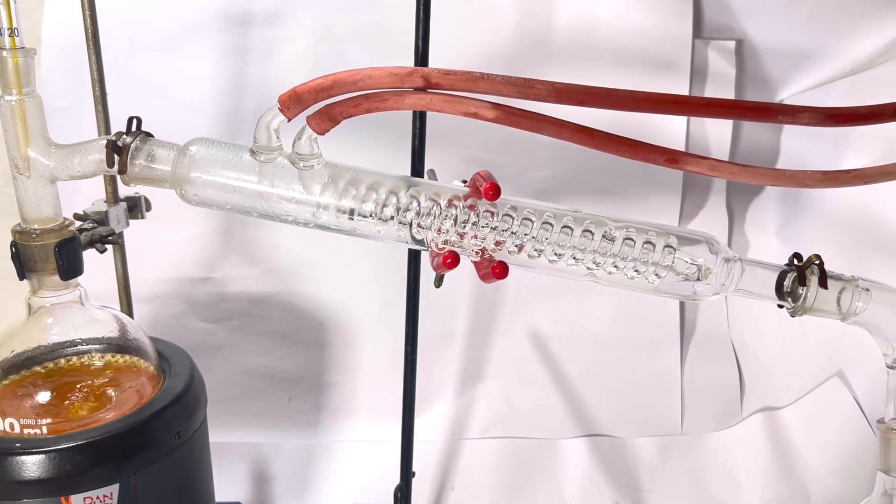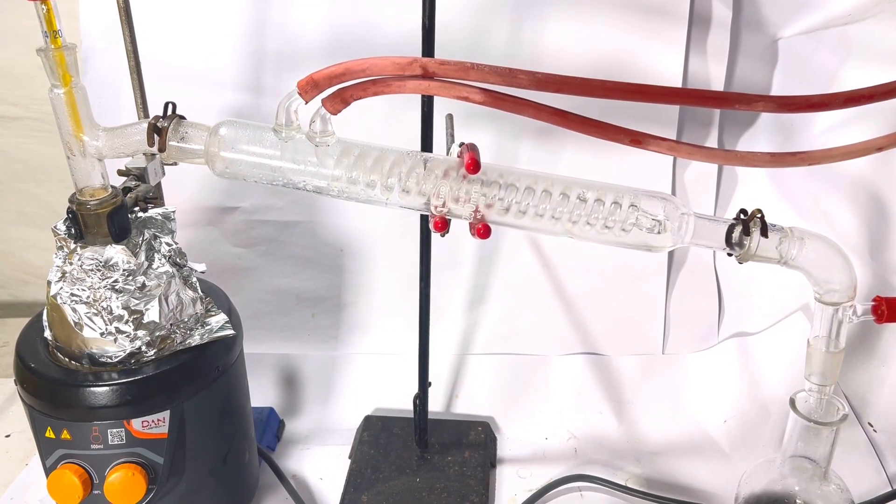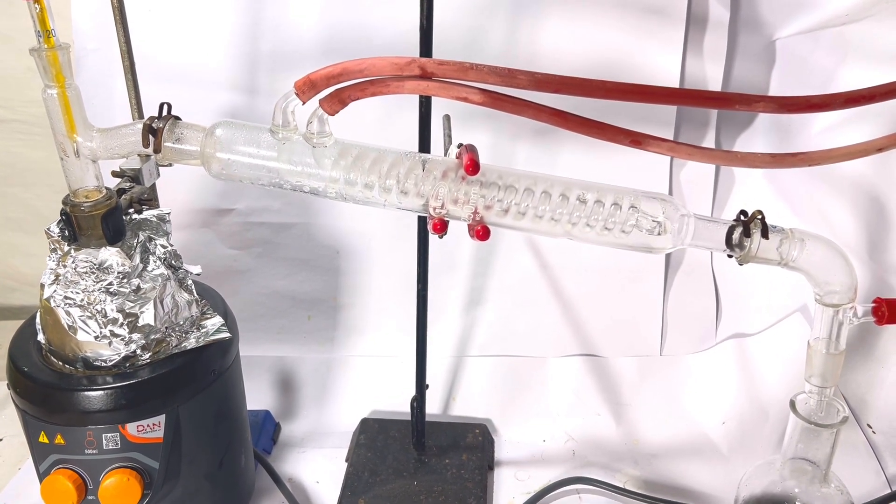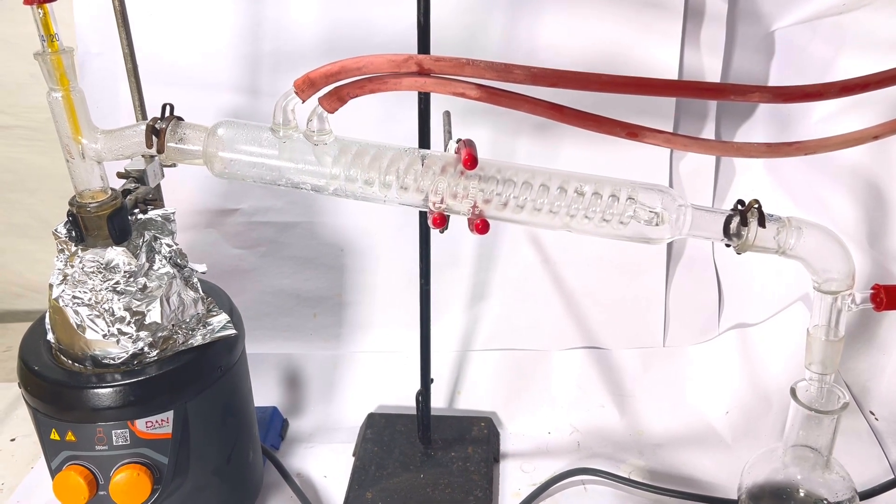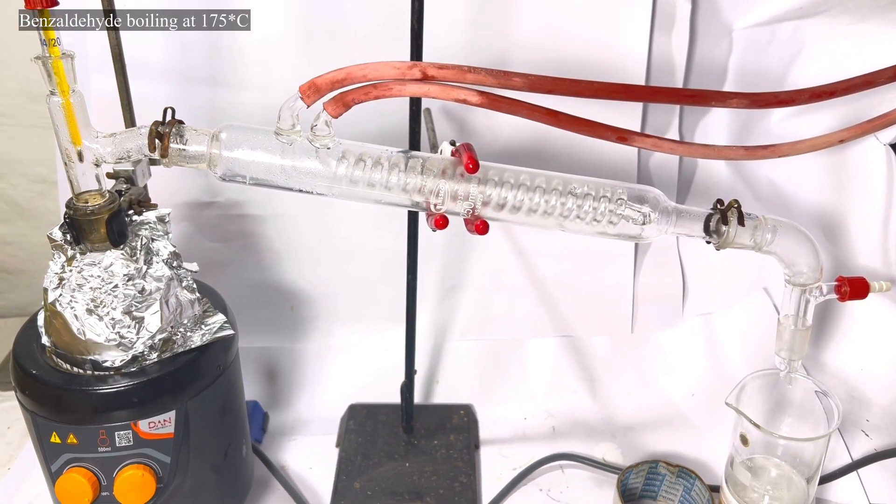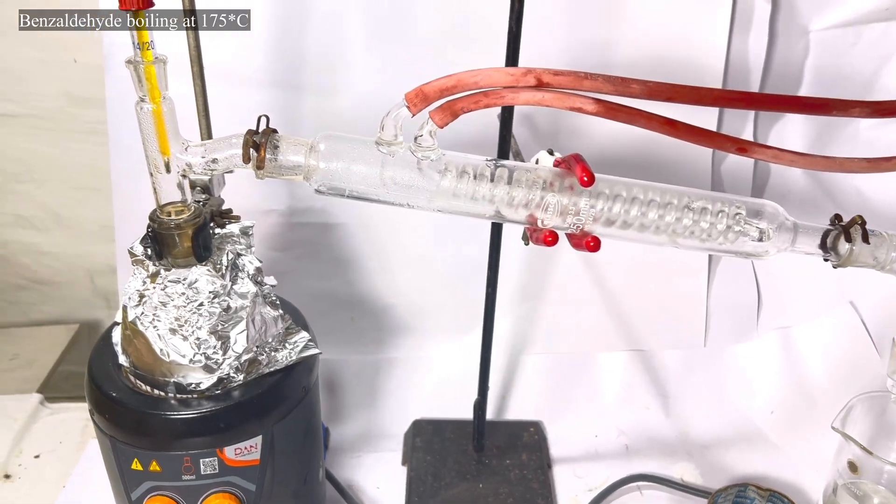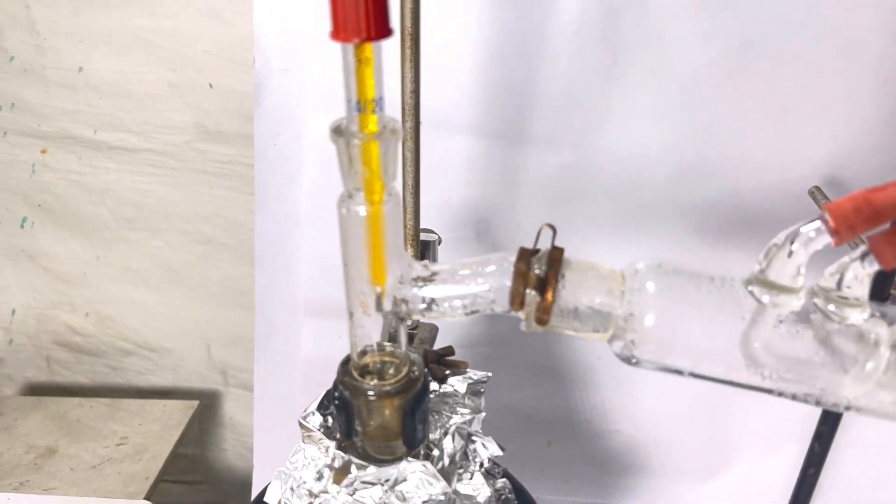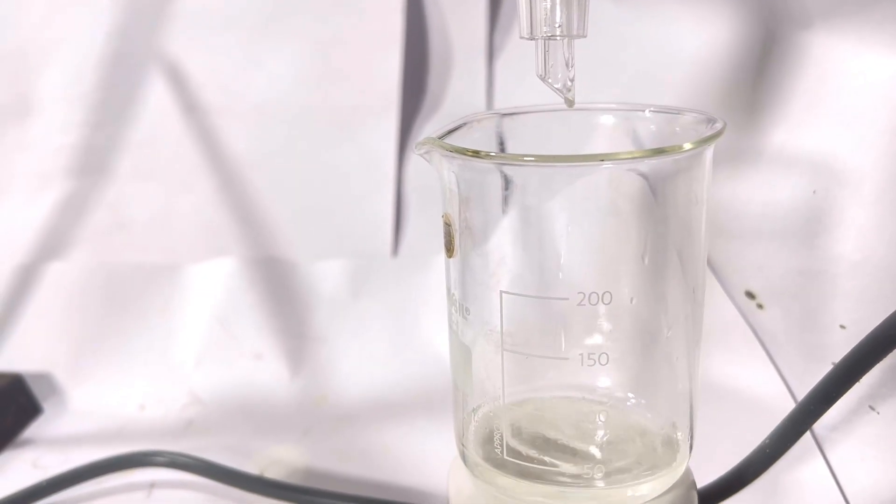After all water had distilled over, temperature starts to slowly climb and aluminum foil was used to insulate the apparatus. The thermometer now reads 178 to 180 degrees C and this causes the benzaldehyde to pass over from the flask. Here you can see the benzaldehyde being collected in a beaker.